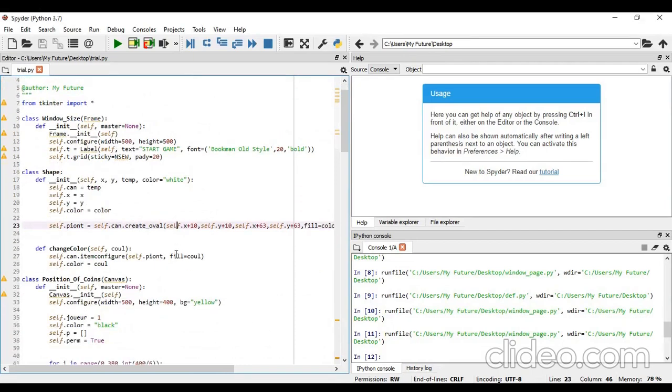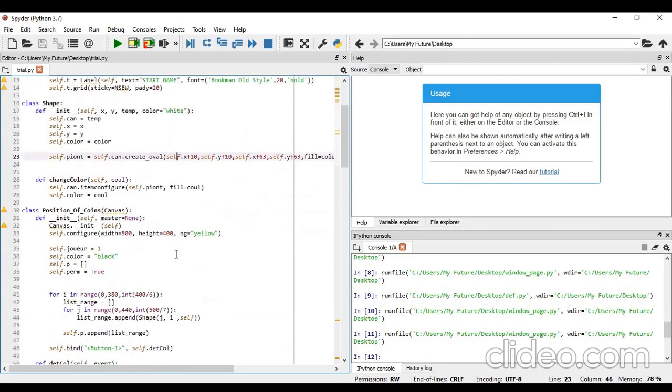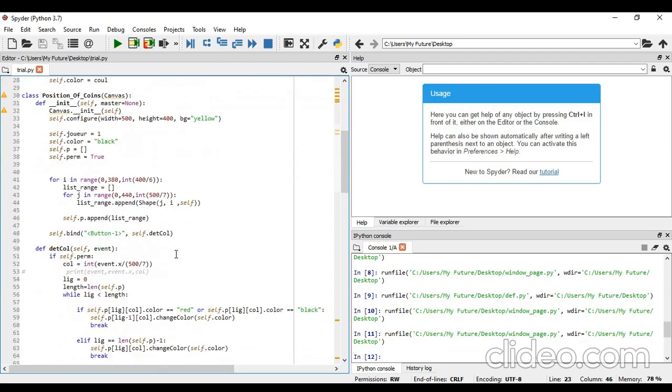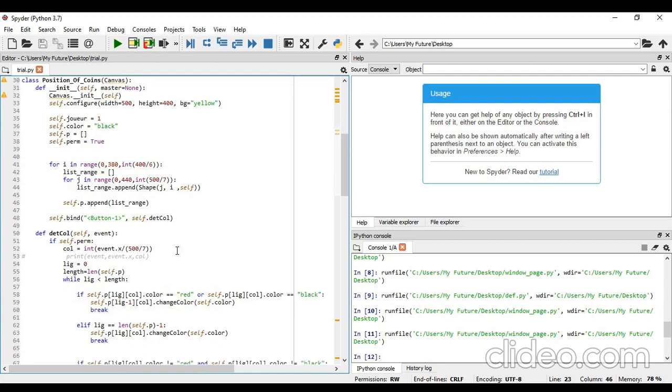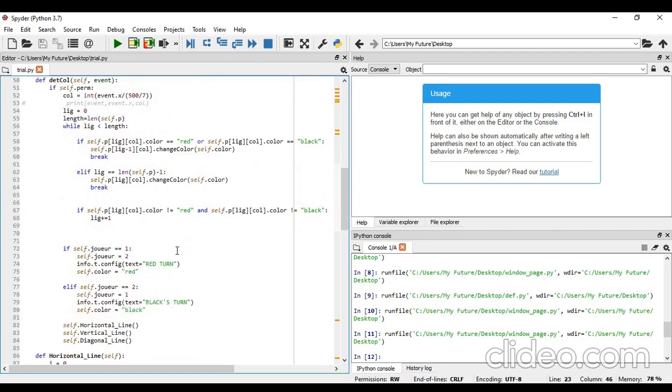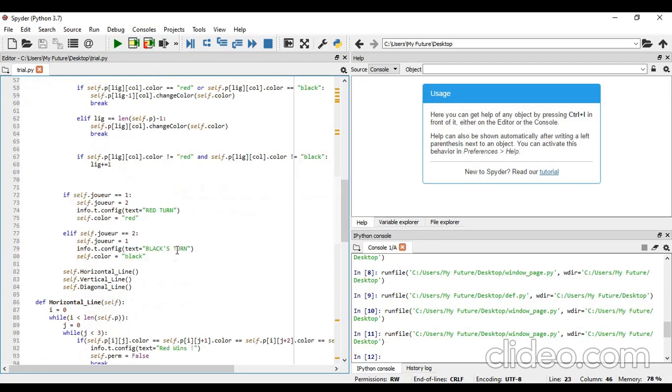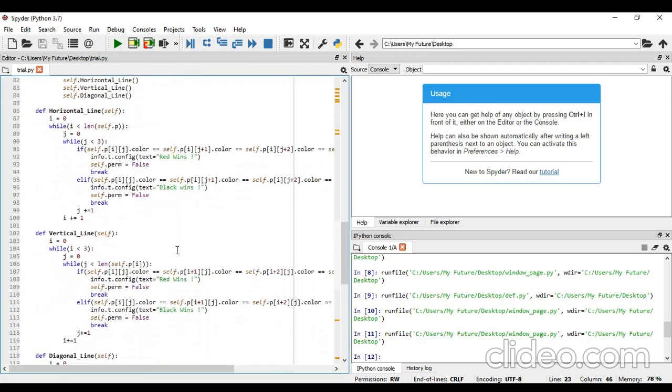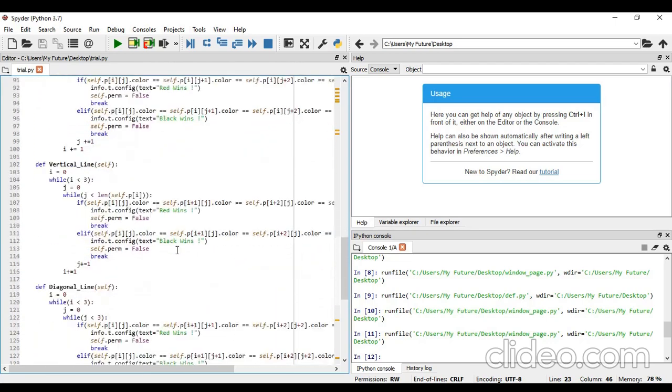This is the first class: window size is for the window framing, then the shape is for the inner frame which will be the oval size window. Then the position of coins: will it be positioned at the top when clicked or will it be at the bottom, the last row, and then get piled up. This method is for the color equality: if it is blank, then black is first inserted; if not, then red. We check for red's turn, black's turn, chance by chance, then for the horizontal, vertical, and diagonal lines.